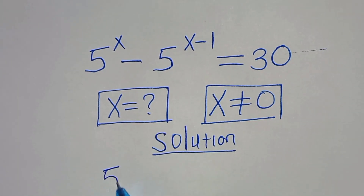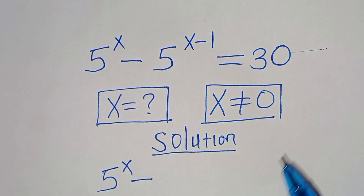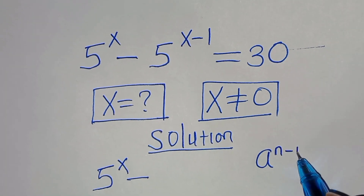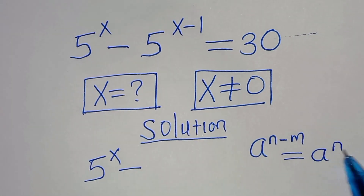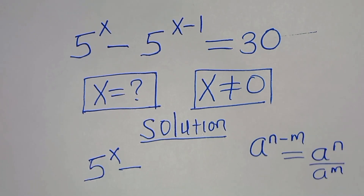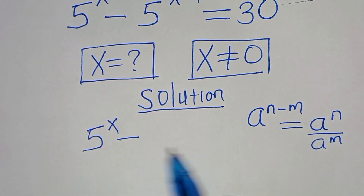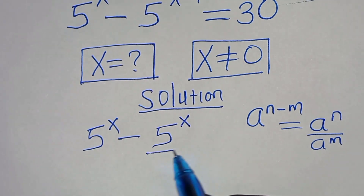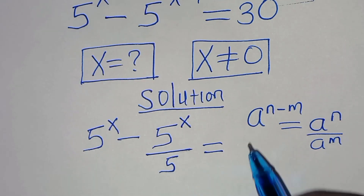We have 5^x subtract 5^(x-1). This is in the form of a^(n-m), which can be expressed as a^n over a^m. Applying this exponent property, we have 5^x divided by 5, and this is equal to 30.